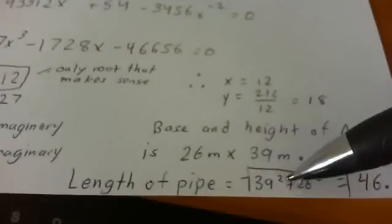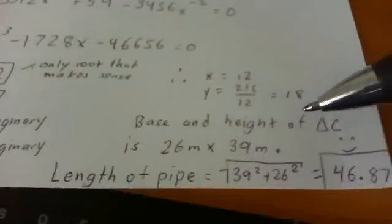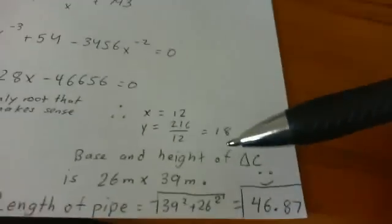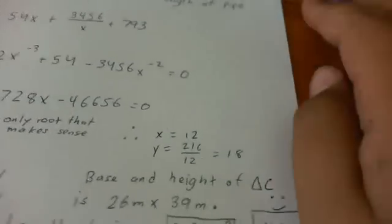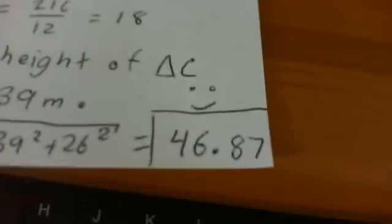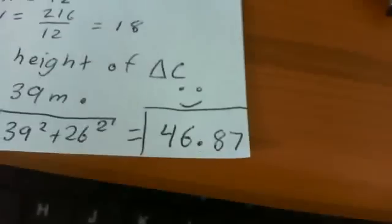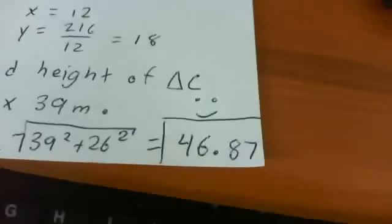So the length of the pipe just using Pythagorean theorem is the square root of 39 squared plus 26 squared which is 46.87 meters. I hope that helped and I hope that answer is correct. It took me a while to solve this. Okay, well bye.